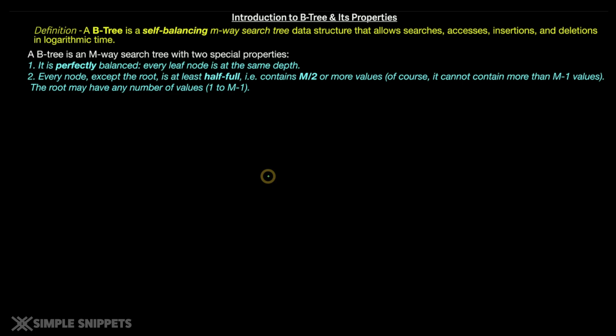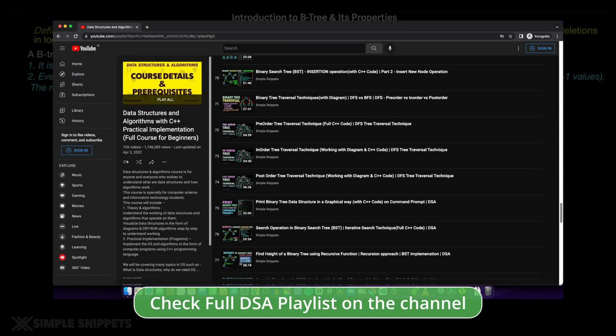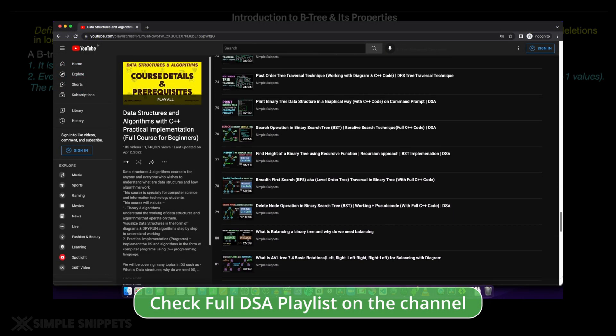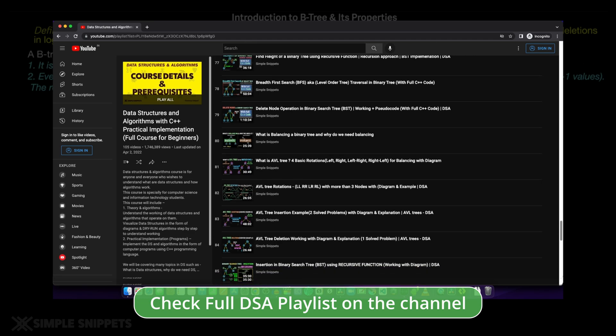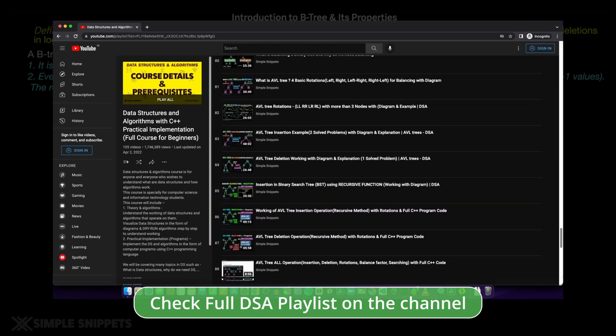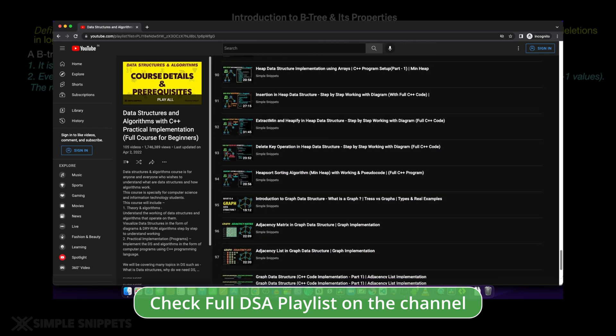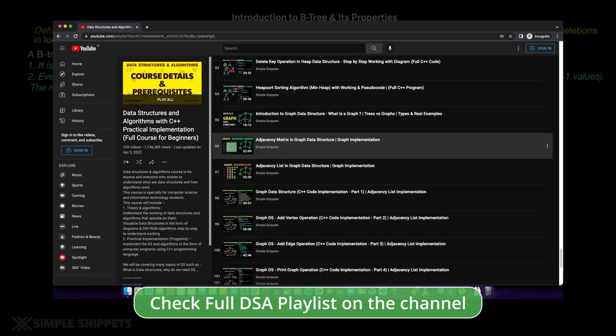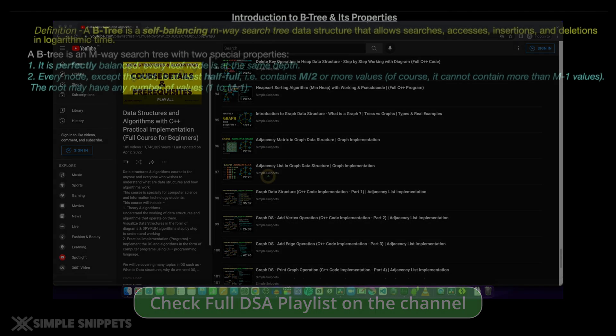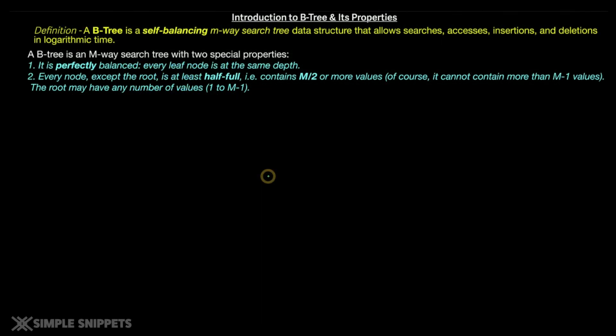Now before we proceed, I am assuming you guys already know what is an M-way tree and what is an M-way search tree. If not, just check out the previous videos in this DSA course because B-tree is basically a type of M-way tree which we will discuss in a minute. For those who have already seen that video, you are good to go. Let's take a quick introduction to this new type of tree called as B-tree.